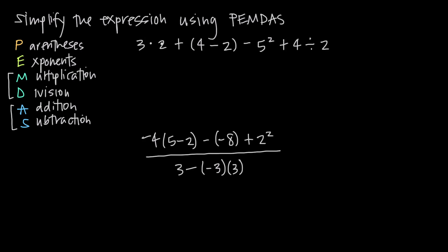Let's apply PEMDAS to a problem with all these different operations. Starting at the top: first, parentheses — inside them we have 4 minus 2, which is 2. Next, exponents — we have 5 squared, which is 25. Now multiplication and division — we have 3 times 2, which is 6, and we have 4 divided by 2, which is 2.